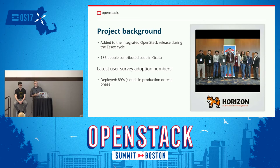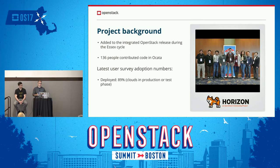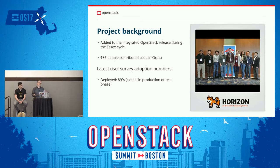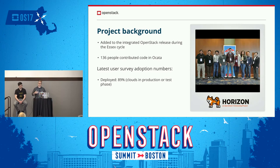For project background, Horizon has been around since almost the beginning of OpenStack. The first commits went in during the Bexar cycle, and it was officially added to the integrated release in Essex. Contribution levels have gone up and down over time, but in the last release at least 136 people had a commit in the Ocata cycle. According to the user survey, we get 89% adoption across production and test clouds — on par with Nova, Neutron, and Cinder. It's pretty ubiquitous, used for onboarding, troubleshooting, and status checks.